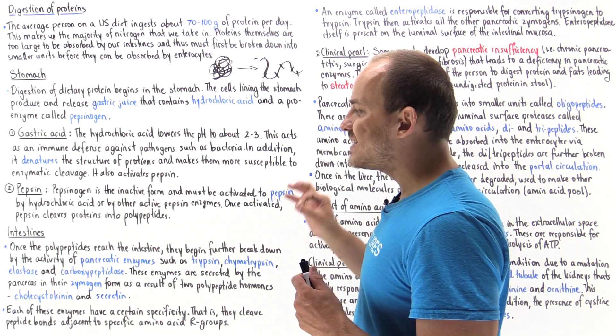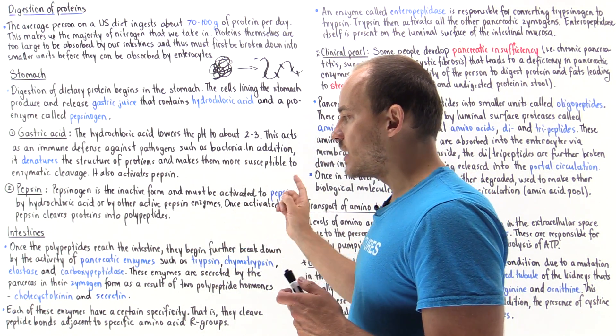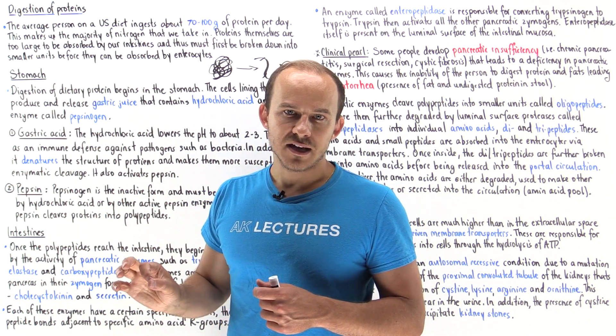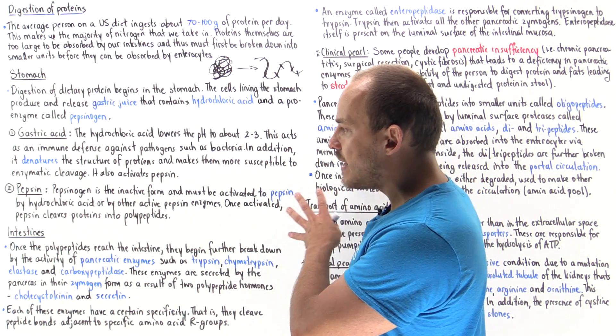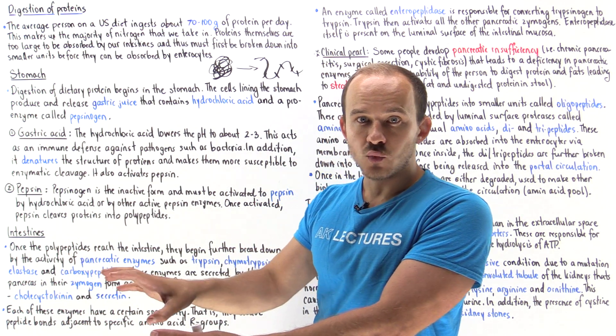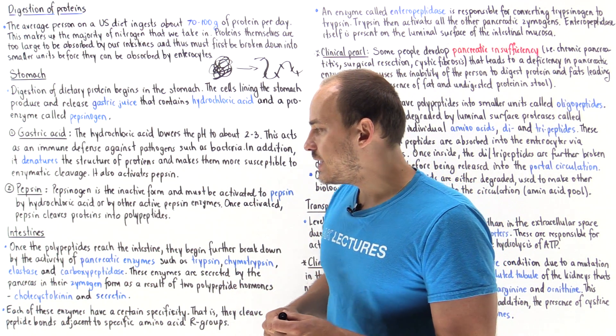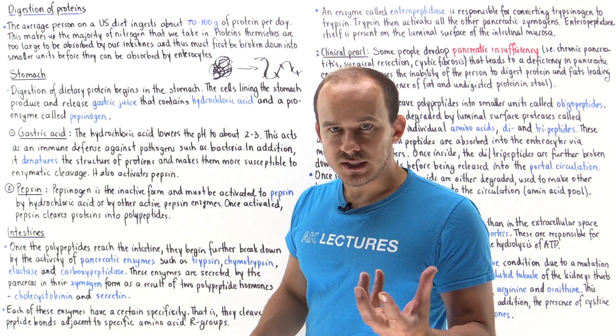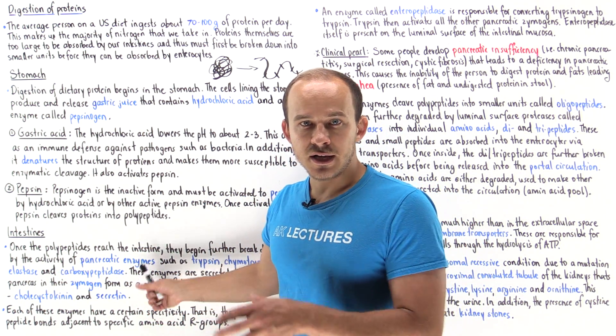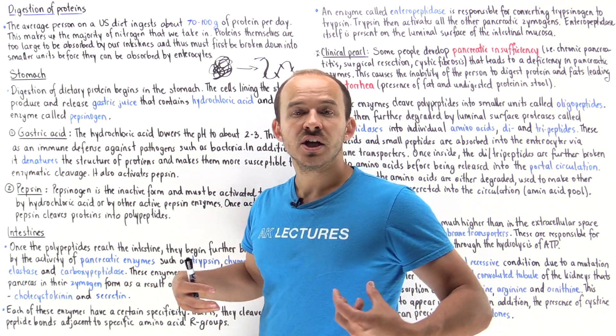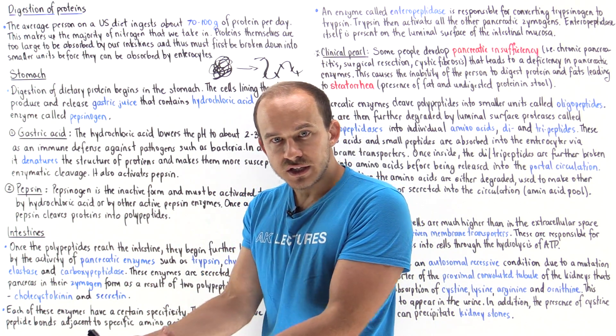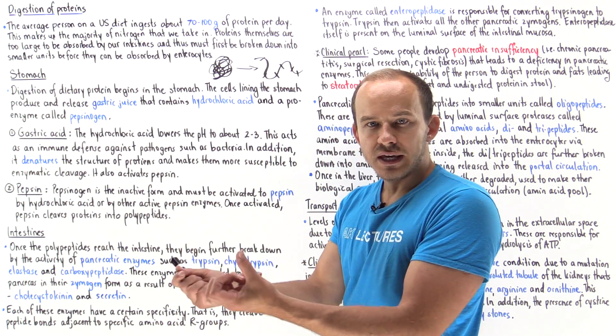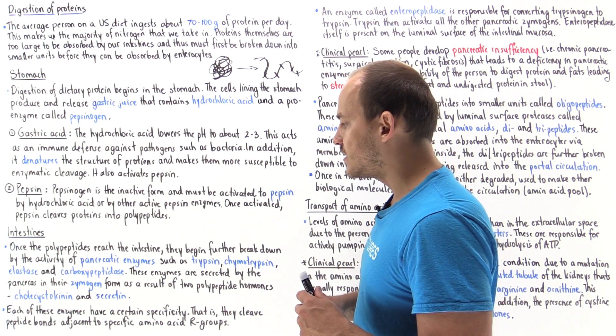What's the signal that causes the pancreas to actually release these pancreatic enzymes? When the food makes its way into the duodenum, that stimulates the release of these hormones called cholecystokinin (CCK) as well as secretin, and these can act on the pancreas to release the pancreatic juices and enzymes into the duodenum of the small intestine.